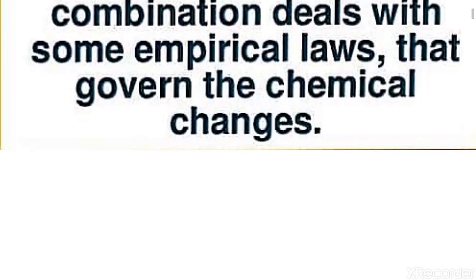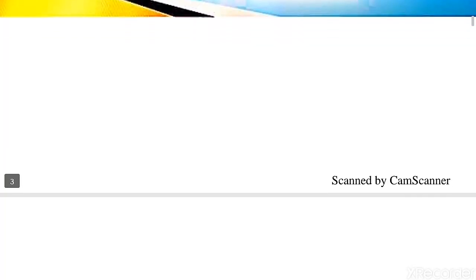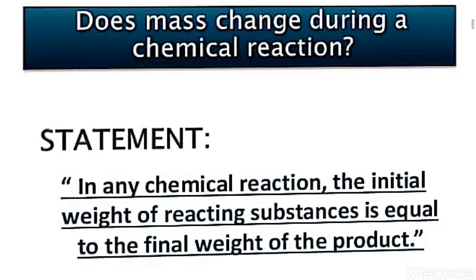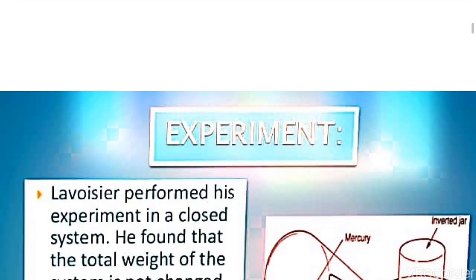The first law is the Law of Conservation of Mass. This law was put forward by scientist Antoine Lavoisier. According to this law, in a chemical reaction, the initial weight of reacting substances is equal to the final weight of the products. That is, mass can neither be created nor destroyed, but it can be transferred from one form to another. The total mass of the reactants is equal to the total mass of the products.